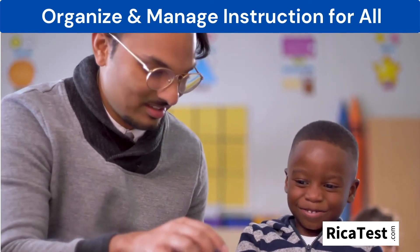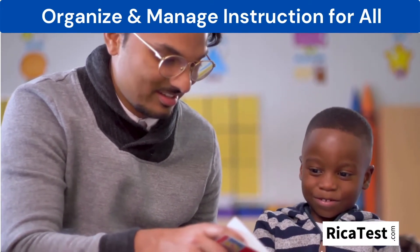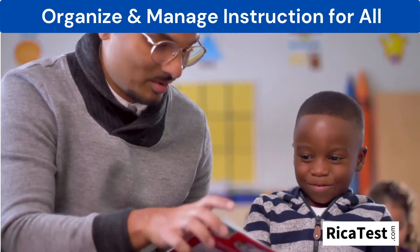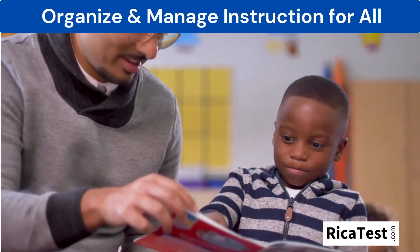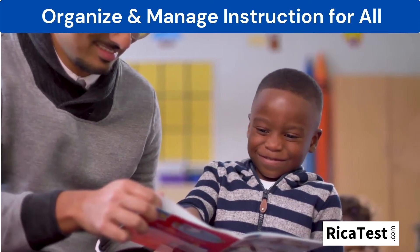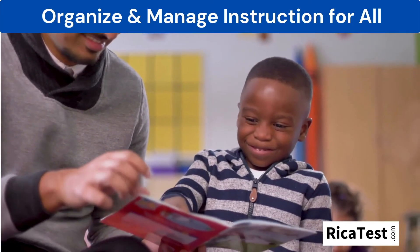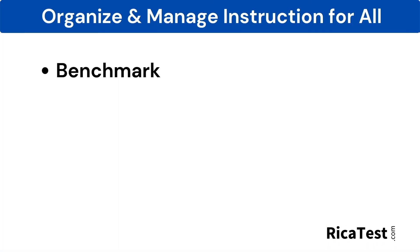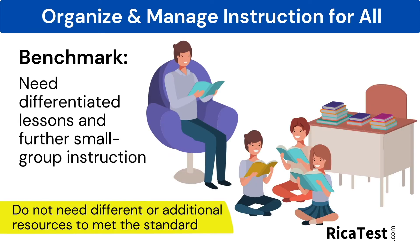Teachers effectively manage reading instruction by grouping students within one of three categories. The first is benchmark. Students placed within this category need differentiated lessons and further small group instruction. They do not need different or additional resources in order to help them meet the standard.